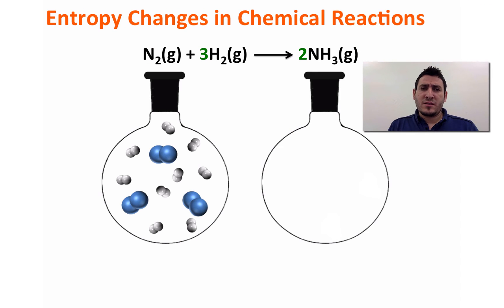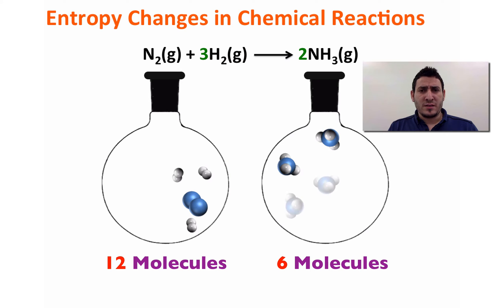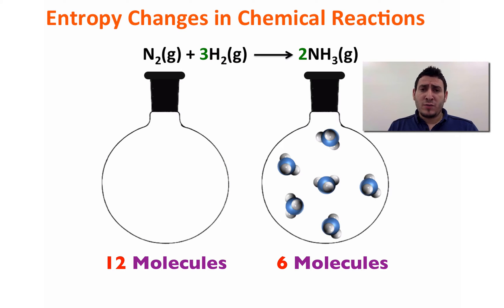Let's consider the entropy change in chemical reactions, taking the example of making ammonia from nitrogen and hydrogen. We can clearly notice that the number of molecules decreases, and therefore the disorder decreases. Fewer molecules means fewer positional configurations and therefore lower entropy.